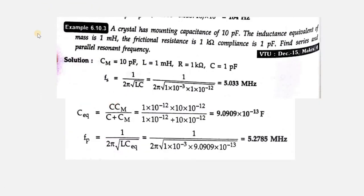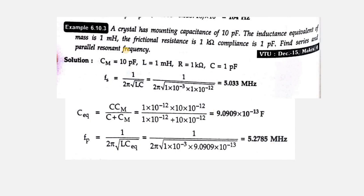Problem 2: A crystal has mounting capacitance Cp = 10 pF, inductance L = 1 mH, frictional resistance R = 1 kΩ, and series capacitance C = 1 pF. Find the series and parallel resonant frequencies. Using the same formulas: Fs = 5.033 MHz and Fp = 5.2785 MHz. That completes the crystal oscillator discussion, including explanation and problems.